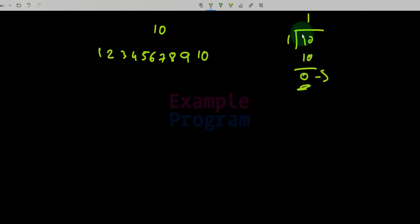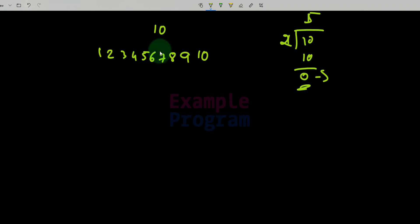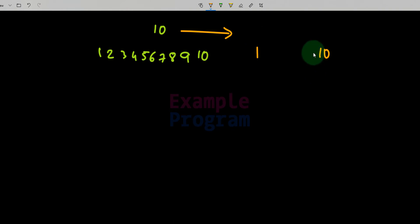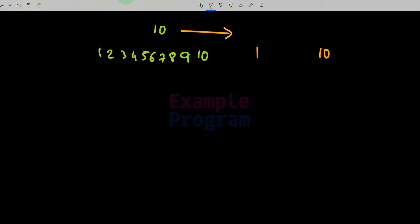Now, we already know that 1 and the number itself are factors of 10. So since we already know this, we don't have to check for them. We can skip checking 1 and the number itself.